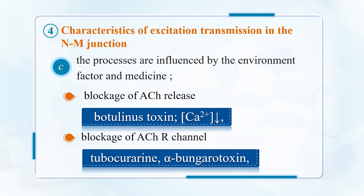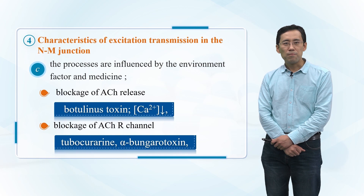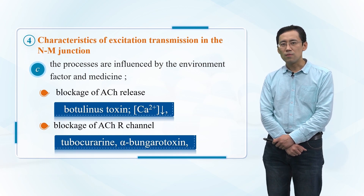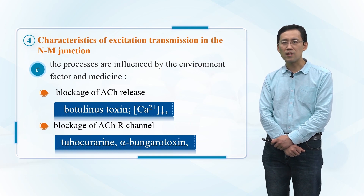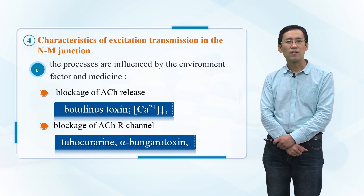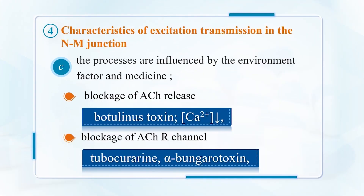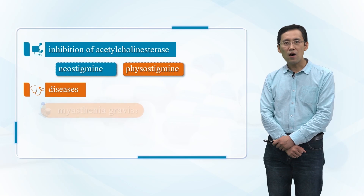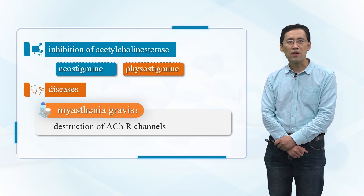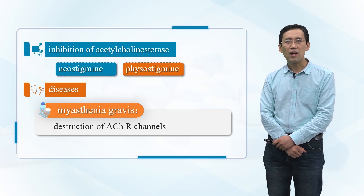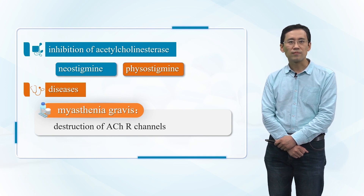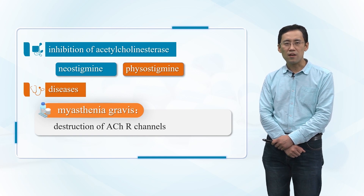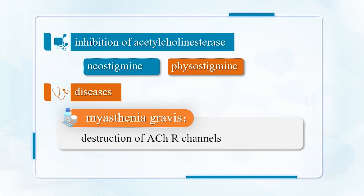The process is influenced by environmental factors and medicine. Blockage of ACh release includes botulinus toxin and decreased calcium concentration. Blockage of ACh receptor channels includes tubocurarine and others. Inhibition of acetylcholinesterase includes neostigmine and physostigmine. Some diseases can also affect the neuromuscular junction, such as myasthenia gravis, which involves destruction of ACh receptor channels.